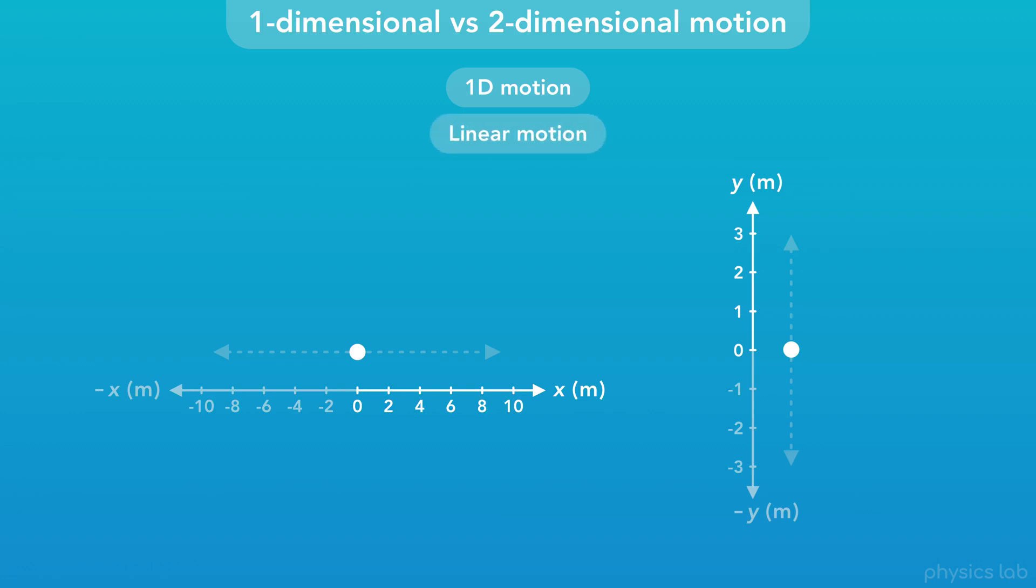If an object is in 1D motion, only the X position changes, or only the Y position changes.